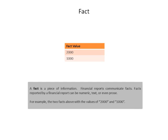A fact is a piece of information. Financial reports communicate facts. Facts reported by a financial report can be numeric, text, or prose. For example, above you see two facts: the fact 2,000 and the fact 1,000.